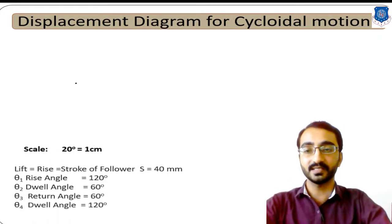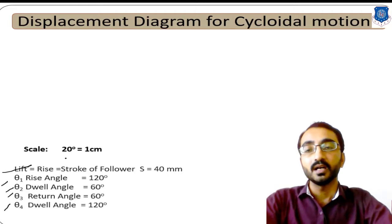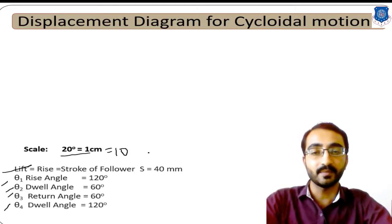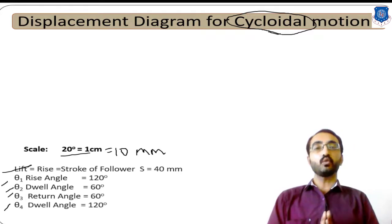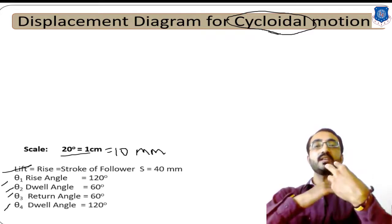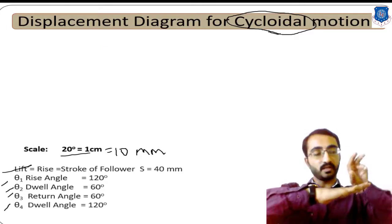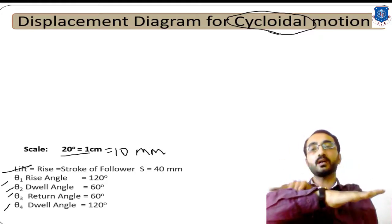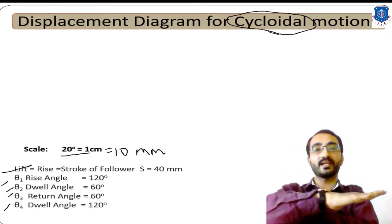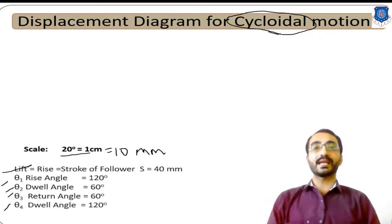We use the same basic data: stroke, theta 1, 2, 3, 4 — four phases of one cam rotation — with a scale of 20 degrees equal to 1 centimeter or 10 mm. Cycloidal motion is the type of motion in which a circle rolls on a straight line. By tracing the contact point as the circle rolls, you obtain the locus known as a cycloid. So the rolling rotation of one circular object on a straight line produces cycloidal motion.